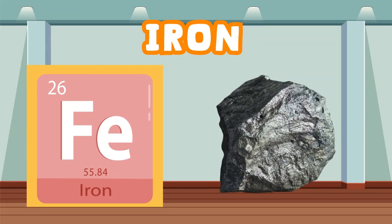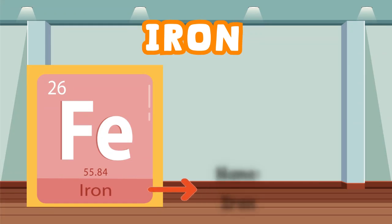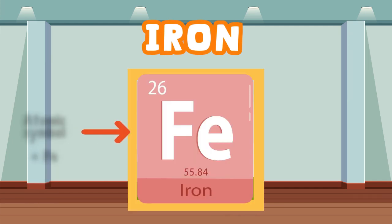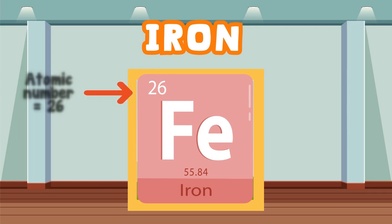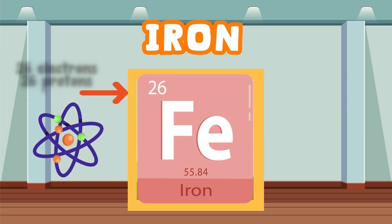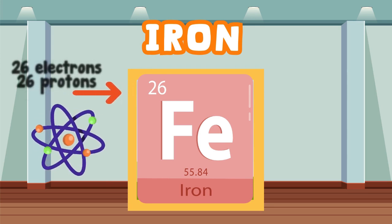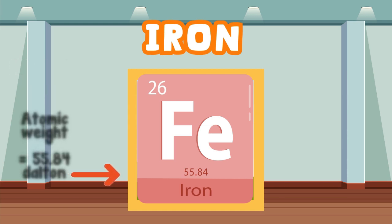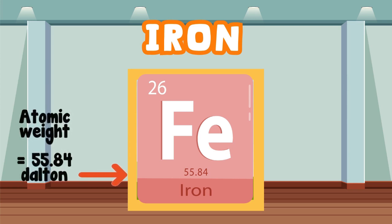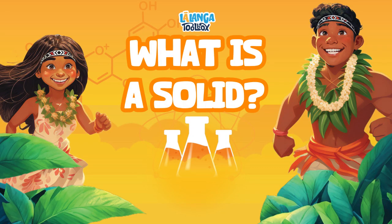Can you help us decode the element of iron? Let's try it. Iron's name is iron. The atomic symbol for iron is a capital F with a lowercase e — Fe. The atomic number for iron is 26. How many electrons and protons does iron have? 26. How much does iron weigh? 55.84 daltons. It's been awesome learning with you about solids — see you next time!